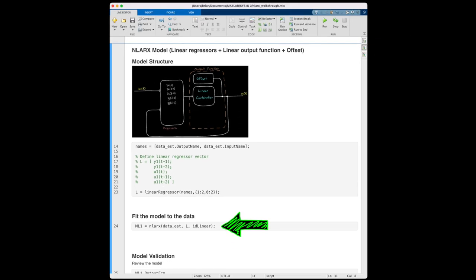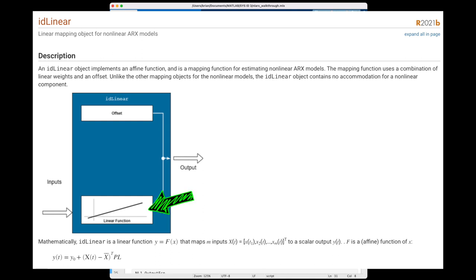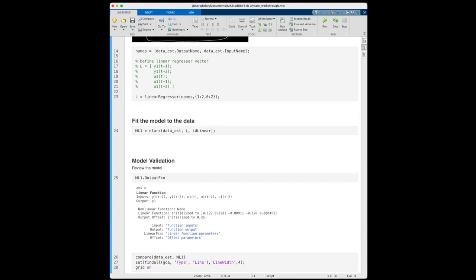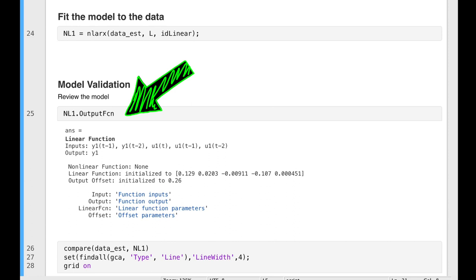Now I can fit our model to the data. I'm using the non-linear ARX function to estimate the model, which uses the estimation data, the linear regressor set, and the linear output function plus offset. That's what this idlinear object is. This object includes a linear component that works on the input and an offset term, exactly as we want. Now if we run this command, it returns a non-linear ARX model. We can check out what the output function converged on. It takes in the regressor vectors we set and outputs the tank height y1. The linear parameters it converged on are these five numbers, and the output offset is 0.26 meters.